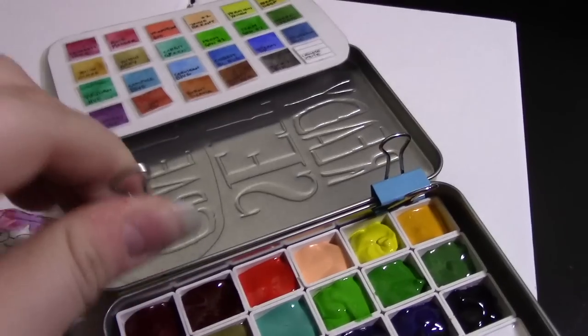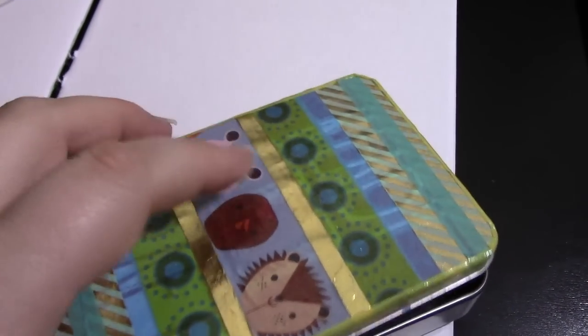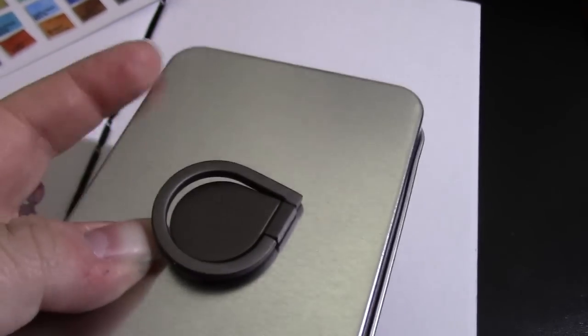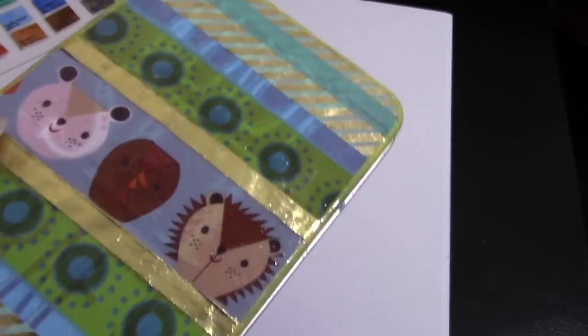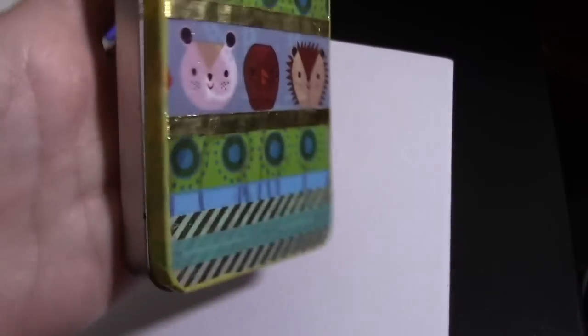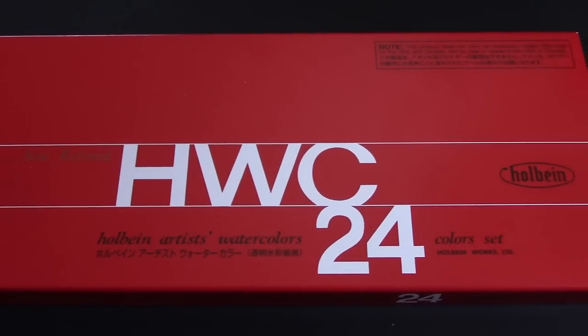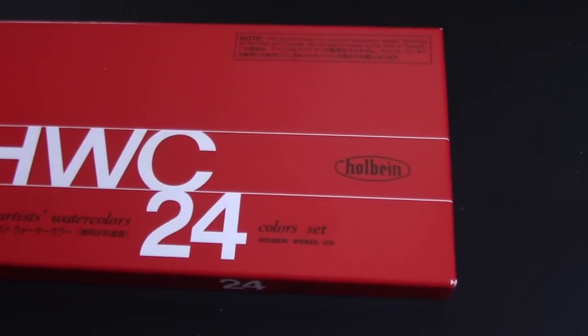This is something I like to call a studio travel palette, because it's small enough and durable enough that it can be thrown into my bag without worrying, but also has enough variety of colors to be used as a studio palette if I so choose. This particular setup was made using the Holbein Watercolors 24 set, and any of the materials used in the video will be linked down in the doobly-doo.